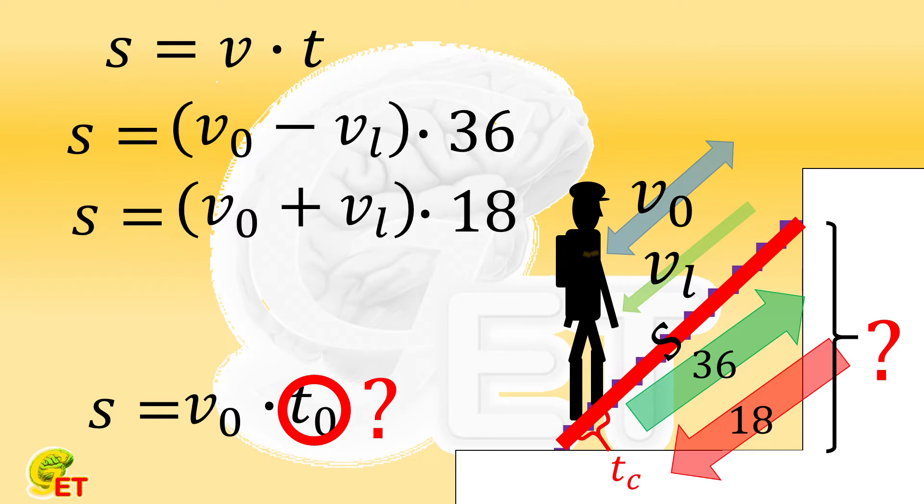Now the problem becomes very simple. Since 36 is twice of 18, the downward speed is twice of the upward speed. In other words, Mr. Get's own speed is three times the speed of the escalator. We can combine this conclusion with any one of the previous upward or downward situations to solve the problem.